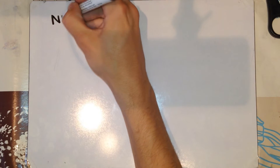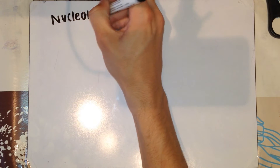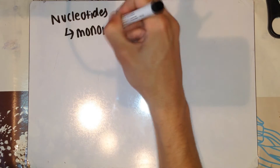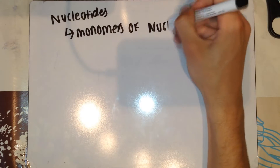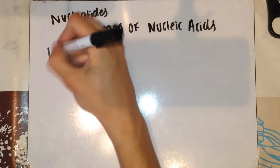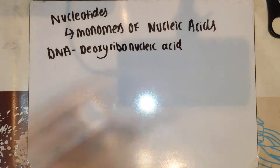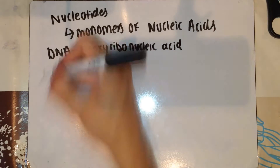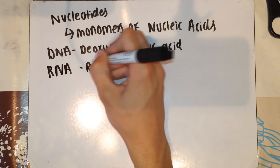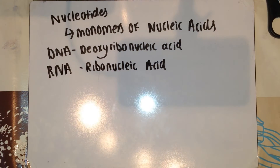In today's video, we're going to talk about nucleotides and semi-conservative replication. Nucleotides are the monomers of nucleic acids. You have two types of nucleic acid: DNA is deoxyribonucleic acid, and RNA is ribonucleic acid.